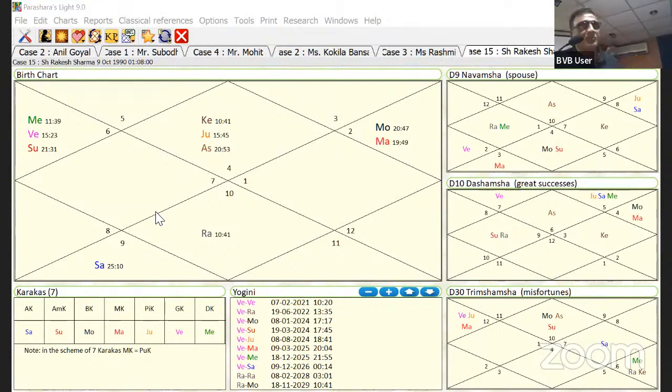Now if you see in this chart, where is my 2nd lord? 2nd lord Sun. If you see, 2nd lord Sun is placed in the 3rd house. And 11th and 4th lord Venus, he is also placed here, making a strong Dhan yoga also in the 3rd house.